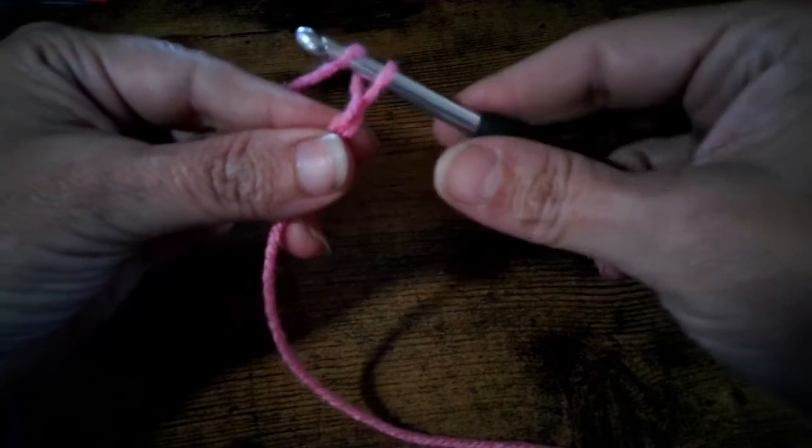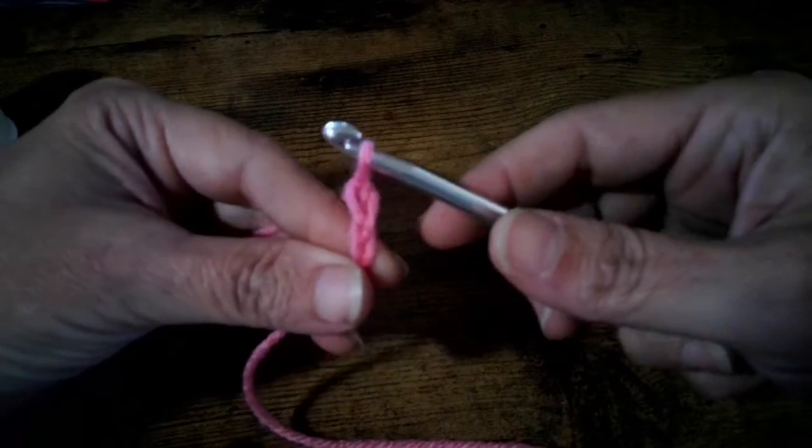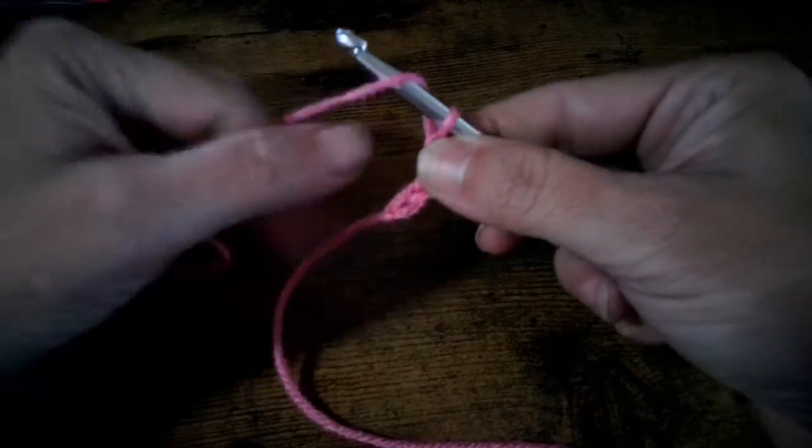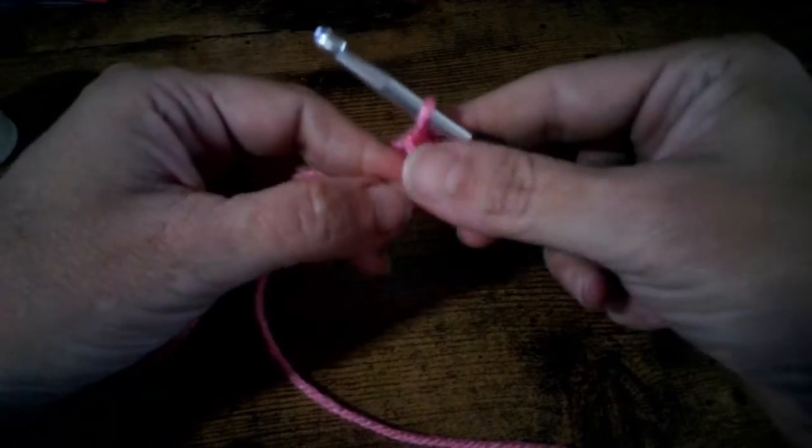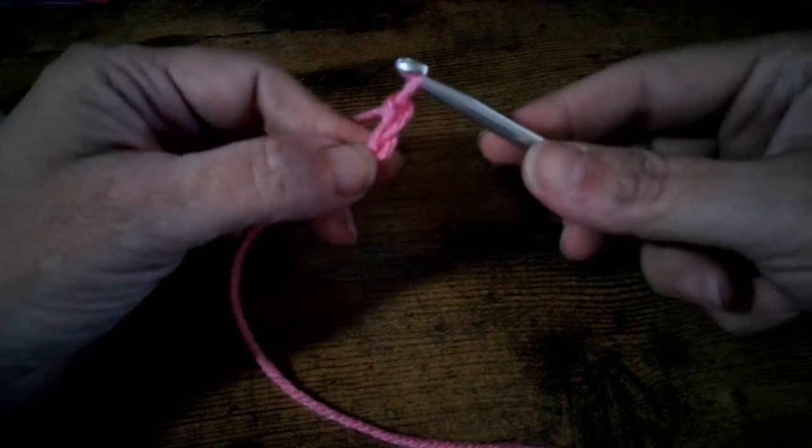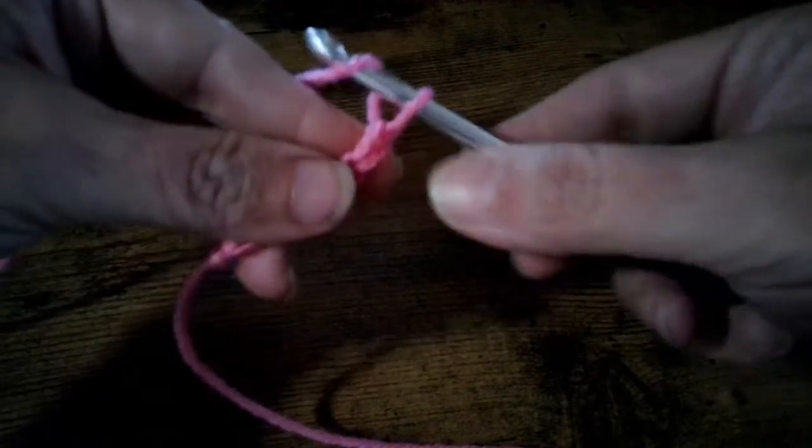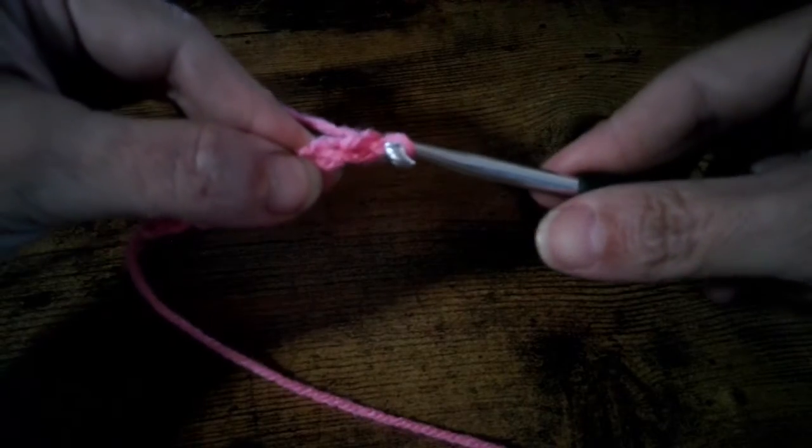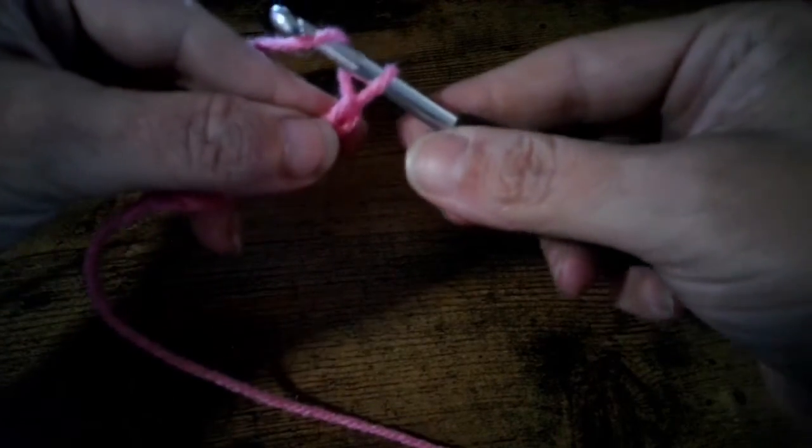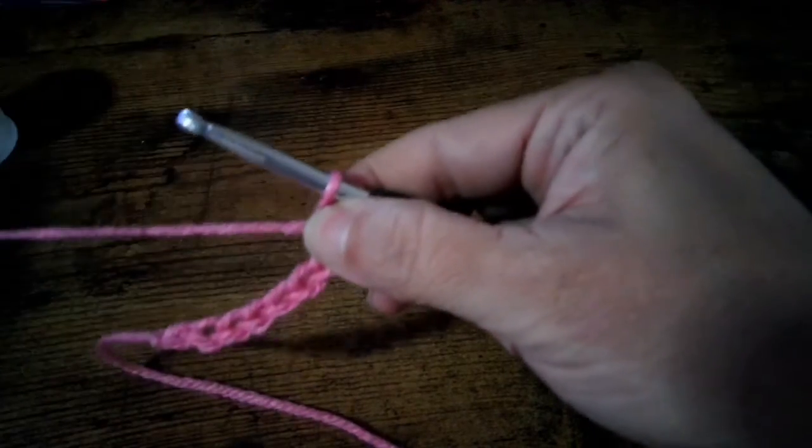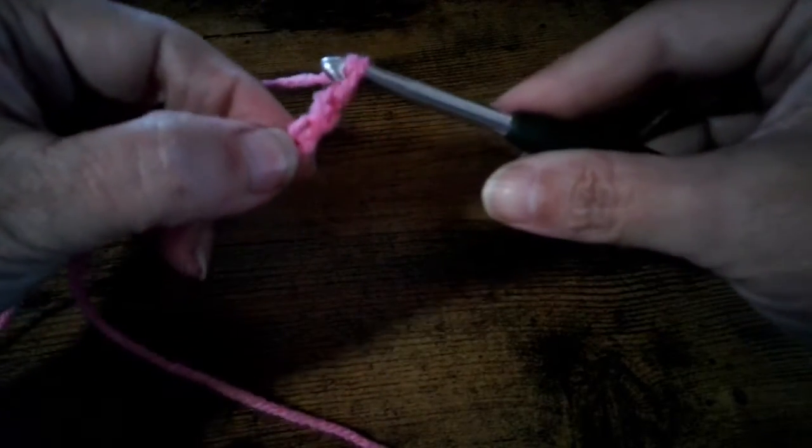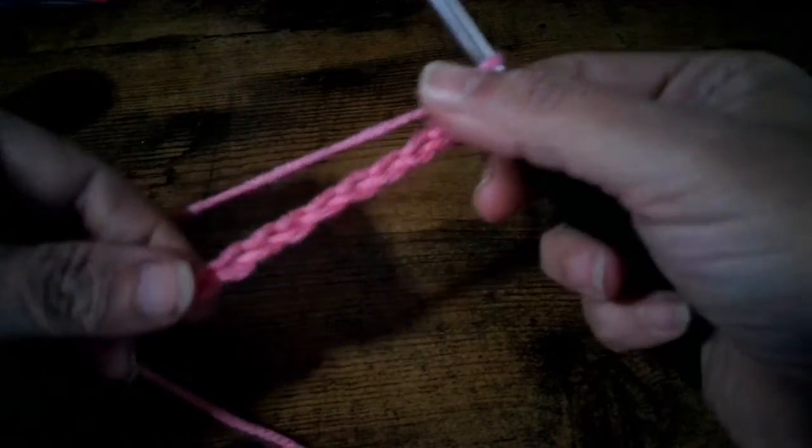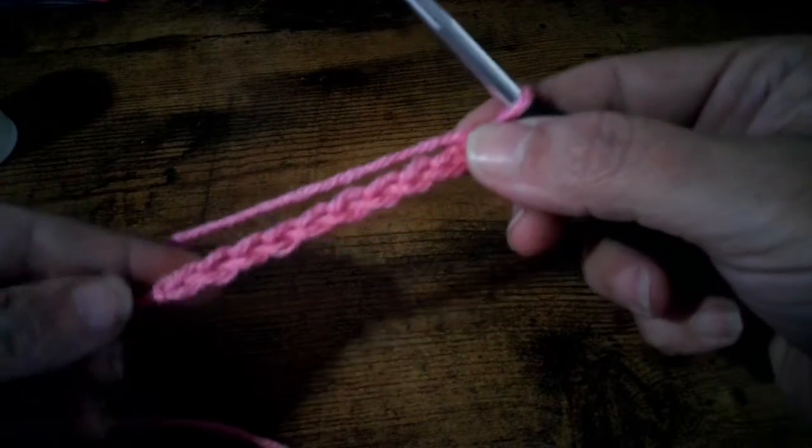That's two chains. Wrap the yarn and pull it through. We're gonna do ten. Wrap and pull through—that's four, five, six, seven, eight, nine, and ten. That is how you make a starting chain.